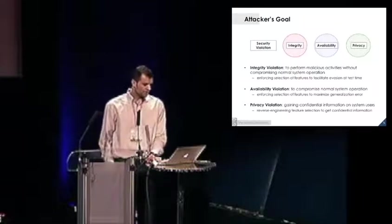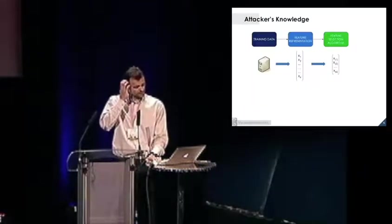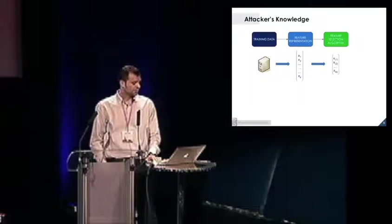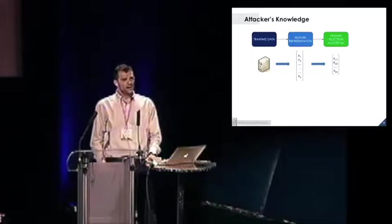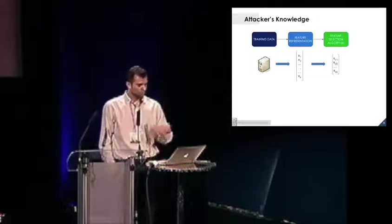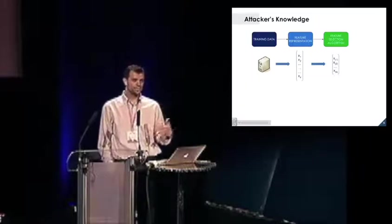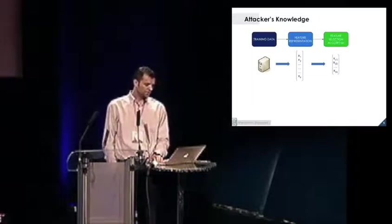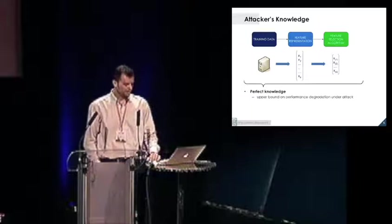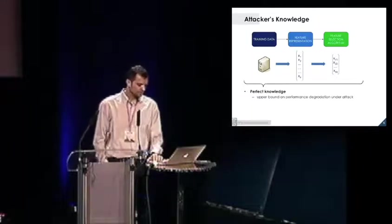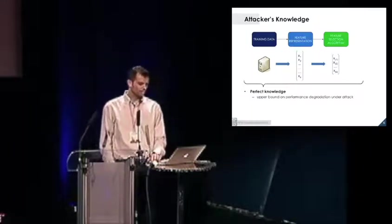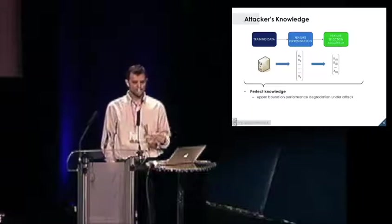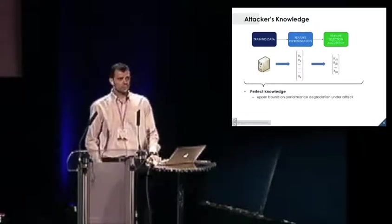As for the attacker's knowledge, the attackers may have different levels of knowledge about the training data, how features are extracted from the training data, about the feature representation, and how the feature selection algorithm works. Which procedure are you using to select features and which is the criterion that you are optimizing to select them. If everything is known to the attacker, we are in the so-called perfect knowledge case. Although this is probably not very realistic, it's interesting to study because it gives us an upper bound on the performance degradation under attack that may be incurred. It's a sort of worst case analysis.